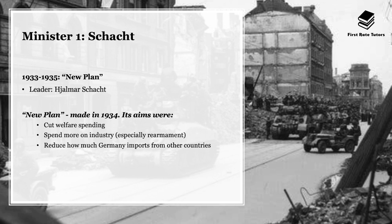Hitler appointed two ministers to implement his economic policies. The first was Schacht, who from 1933 to 1935 was in charge of implementing what Hitler called the New Plan, written up in 1934. Its aims were: firstly, to cut welfare spending — in other words, to reduce how much the government was spending helping unemployed people. Another aspect was to spend more on industry, especially rearmament, because one of Hitler's aims was to prepare for war.